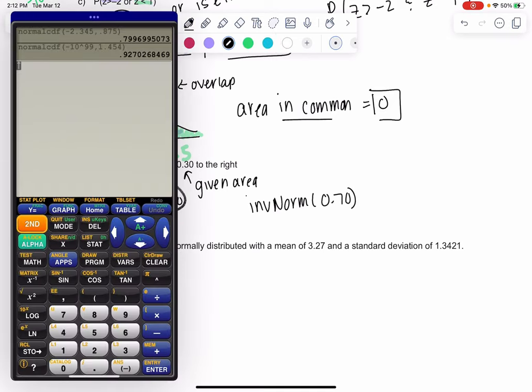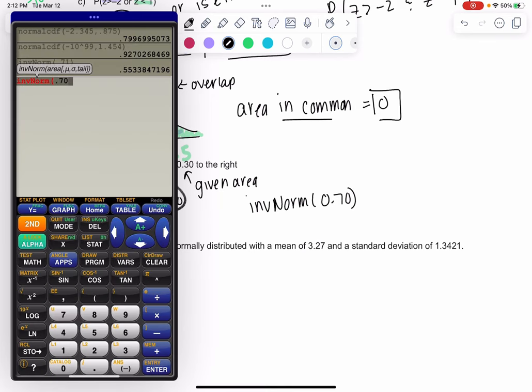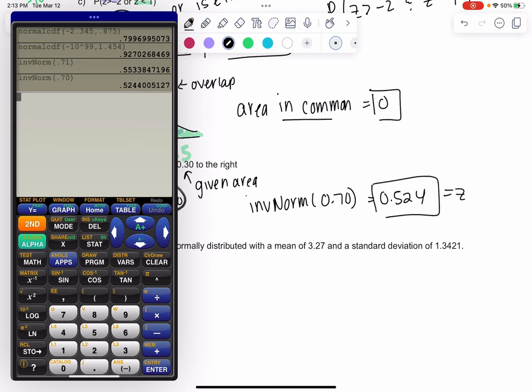We'll do inverse norm of 0.70. It's in the same menu on the calculator. And we get a Z-score of 0.524. We usually do three decimal places for Z-scores. Let's do a couple more normal examples.